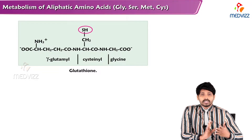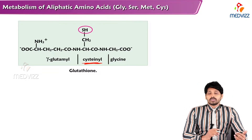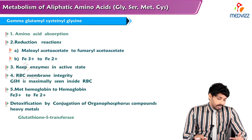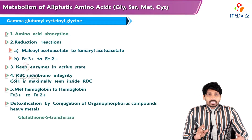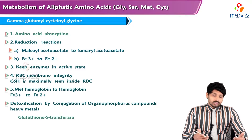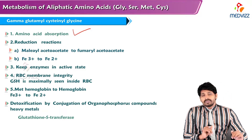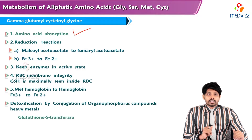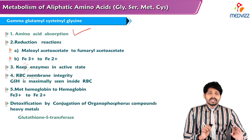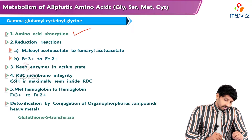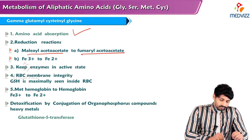Taurine plus cholyl-CoA forms taurocholate, which is a bile acid. Glutathione is a tripeptide: gamma-glutamyl-cysteinyl-glycine, and one of the important amino acids here is cysteine. Glutathione is useful in the gamma-glutamyl cycle for amino acid absorption, particularly in renal tubules and intestine, as discussed in previous videos.